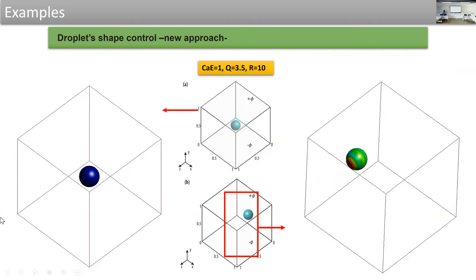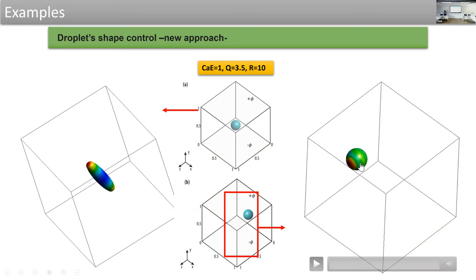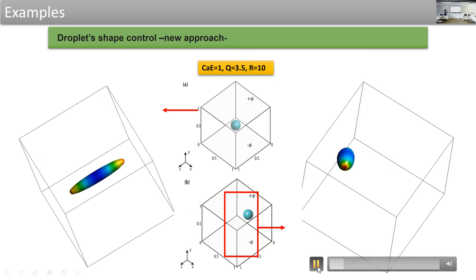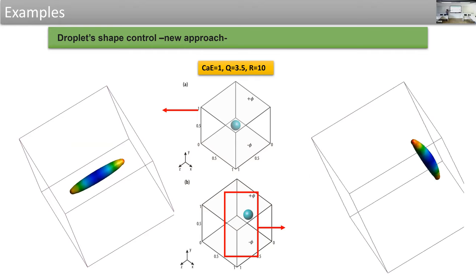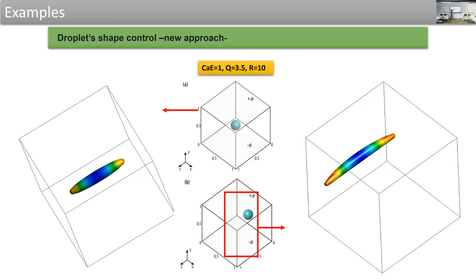With this approach, we can simulate the deformation of a droplet in an electric field. One example places the droplet at the center of the domain; another displaces it close to the wall to induce asymmetric deformation — all possible with full 3D numerical simulation. Attempting the same with the smeared interface approach in OpenFOAM would be possible but very expensive. Using the enriched finite element approach, we can handle it, though it is still expensive.